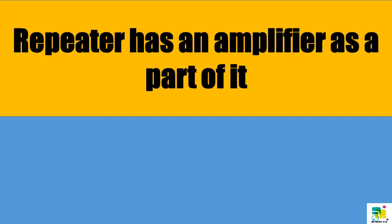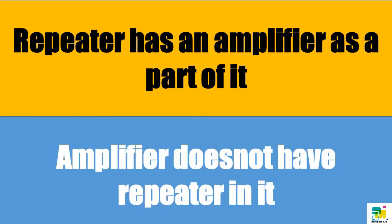A repeater has an amplifier as a part of it, but an amplifier doesn't have a repeater in it.